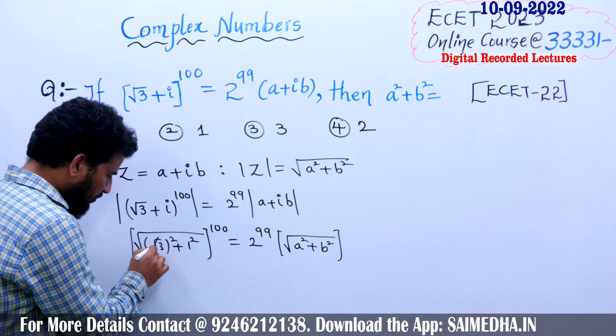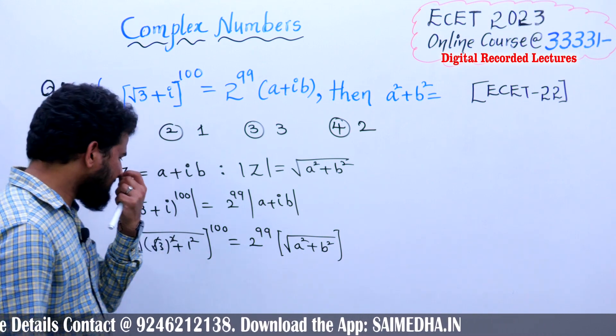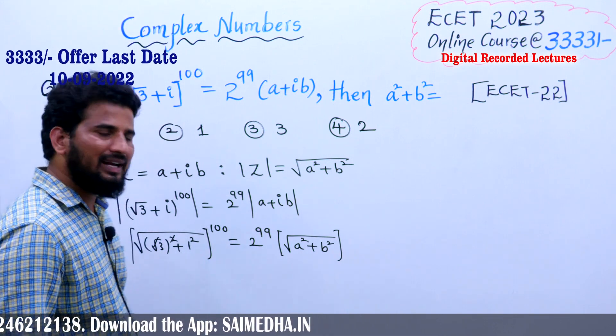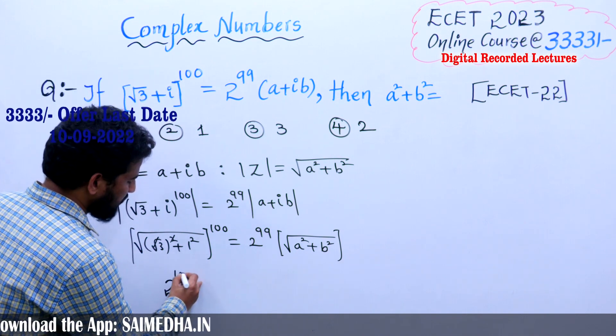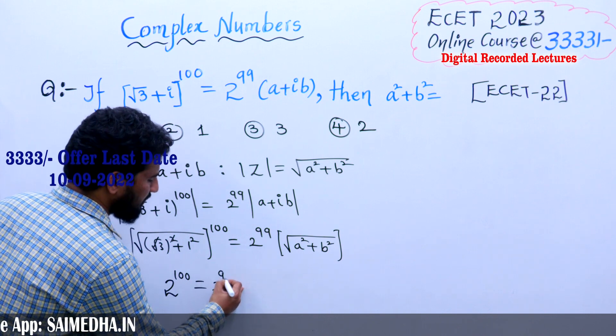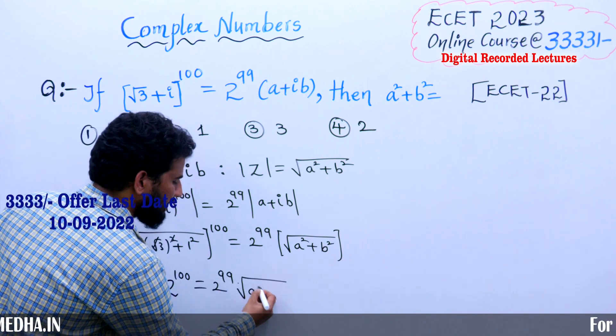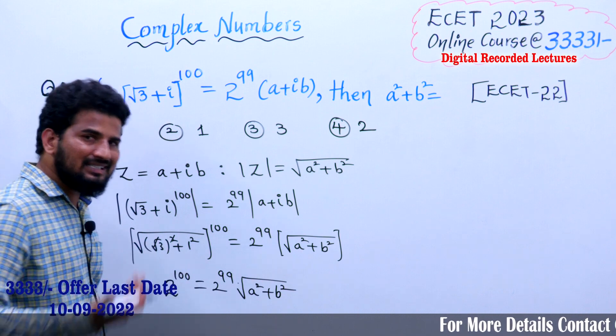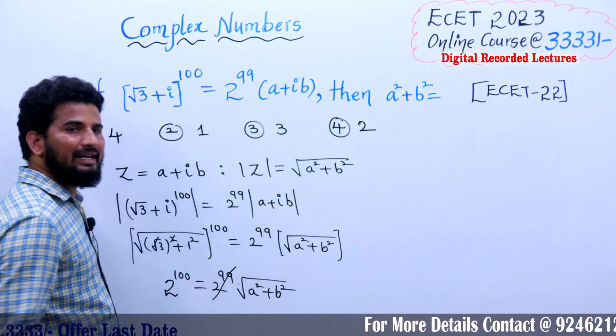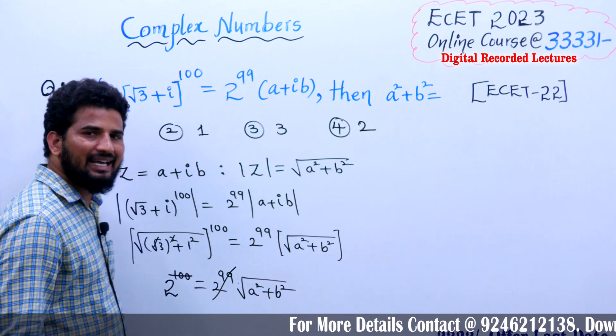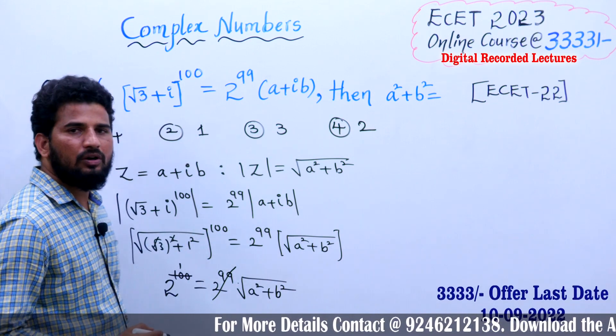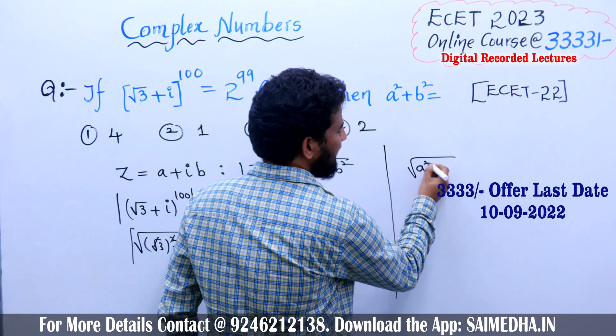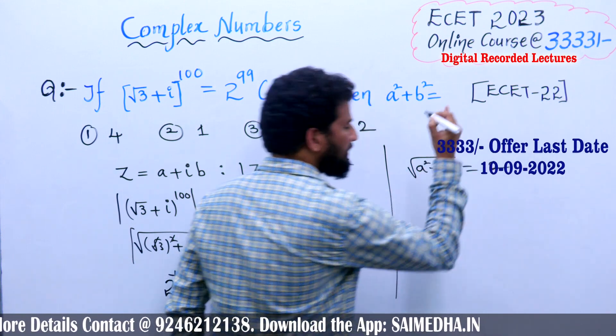The root and square get cancelled. 3 + 1 is 4, then √4 value is 2. Thereby I can write like this: the remaining is 2^100 = 2^99 × √(a² + b²). There is a cancellation possibility: 2^99 and 2^99 cancel. After canceling, there is a remaining of 2^1.